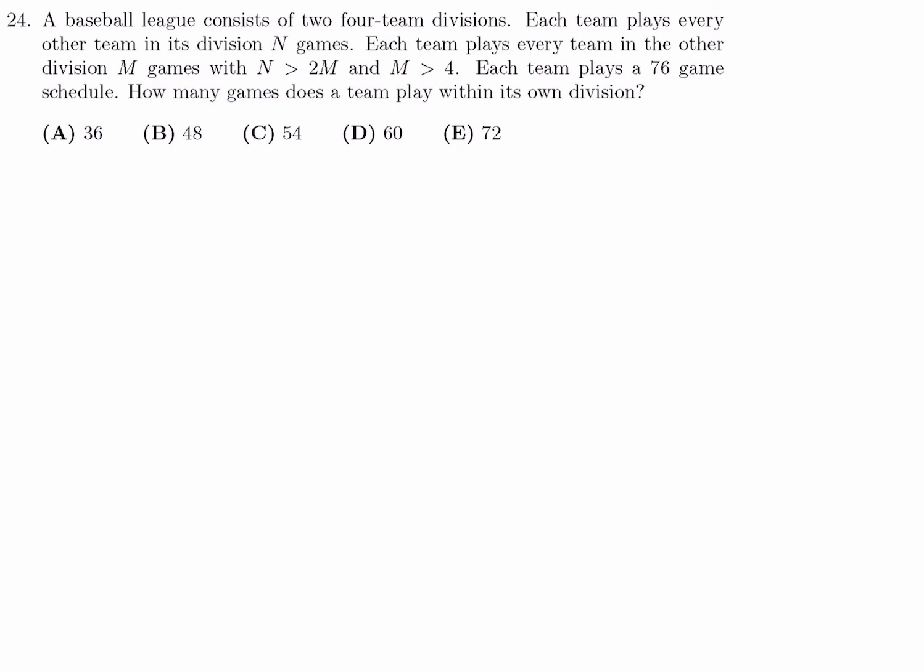A baseball league consists of two four-team divisions. Each team plays every other team in its division, N games. Each team plays every team in the other division, M games. N is greater than 2M, and M is greater than 4. Each team plays a 76-game schedule. How many games does a team play within its own division? So, let's say, in Division 1, we have teams that are called A, B, C, D. In Division 2, you have teams labeled E, F, G, H.